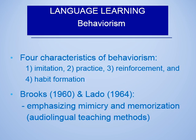Behaviorism was established with the publication of Watson's classic paper, 'Psychology as the Behaviorist Views It,' in 1913. Watson is often considered the father of behaviorism. His famous quote: 'Give me a dozen healthy infants, well-formed, and my own specified world to bring them up in, and I'll guarantee to take anyone at random and train him to become any type of specialist I might select — doctor, lawyer, artist, merchant chief, and yes, even beggar man and thief — regardless of his talents, penchants, tendencies, abilities, vocations, and race of his ancestors.' — Dr. John Watson, Behaviorism, 1930.